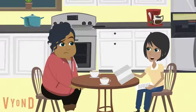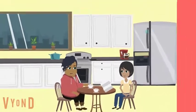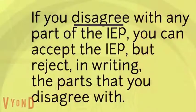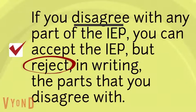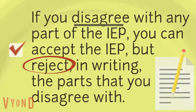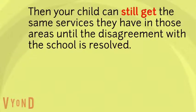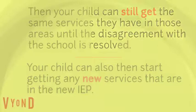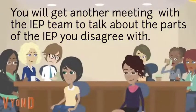What happens when I give this back to the school? Once they get your response, the school should schedule a team meeting to talk about the parts you disagree with. If you disagree with any part of the IEP, you can accept the IEP but reject, in writing, the parts that you disagree with. Then your child can still get the same services they have in those areas until the disagreement with the school is resolved. Your child can also then start getting any new services that are in the new IEP. You will get another meeting with the IEP team to talk about the parts of the IEP you disagree with.